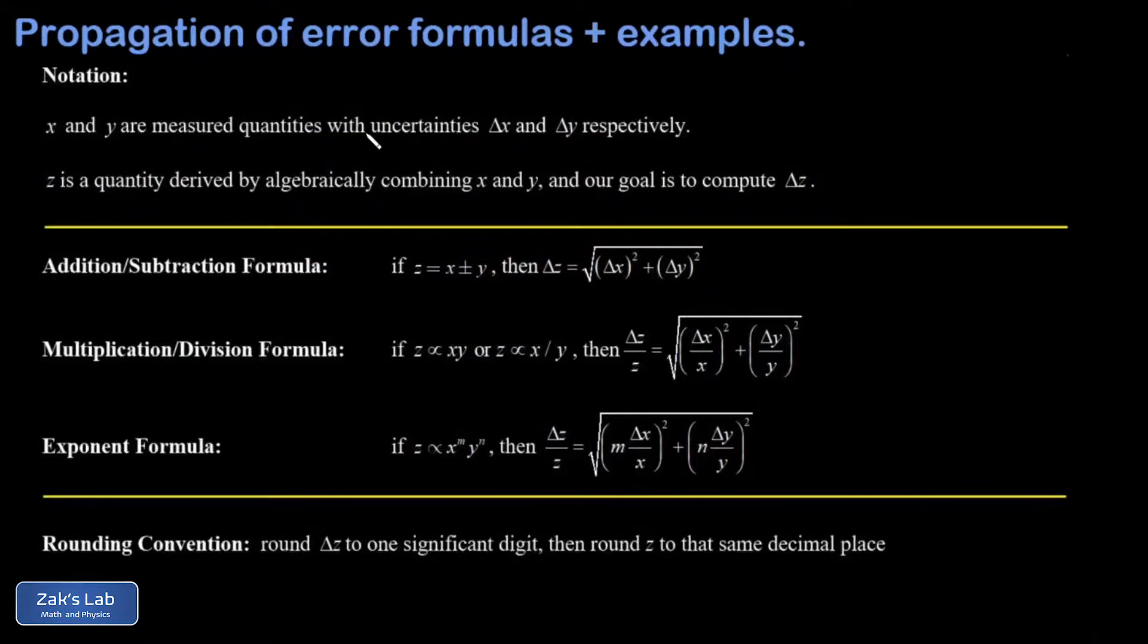In this video, we introduce formulas for the propagation of error, which gives us the most accurate way to compute the uncertainty in a quantity that's derived from multiple measurements. If you're already familiar with the significant digit rules for combining measurements, those are just a rough approximation of how to compute uncertainty, while the propagation of error formulas give us the real answer.